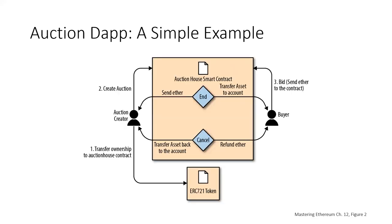Here is a diagram showing our auction process. We've got a number of different components. We've got a smart contract that implements the ERC-721 token at the bottom, and a smart contract implementing the auction — the auction house smart contract — in the middle of the diagram. We've got a web front end using a JavaScript framework, a Web3 JavaScript library to connect to Ethereum via MetaMask, a Swarm client to store images and resources, and a Whisper client for messaging in our chat room between participants.